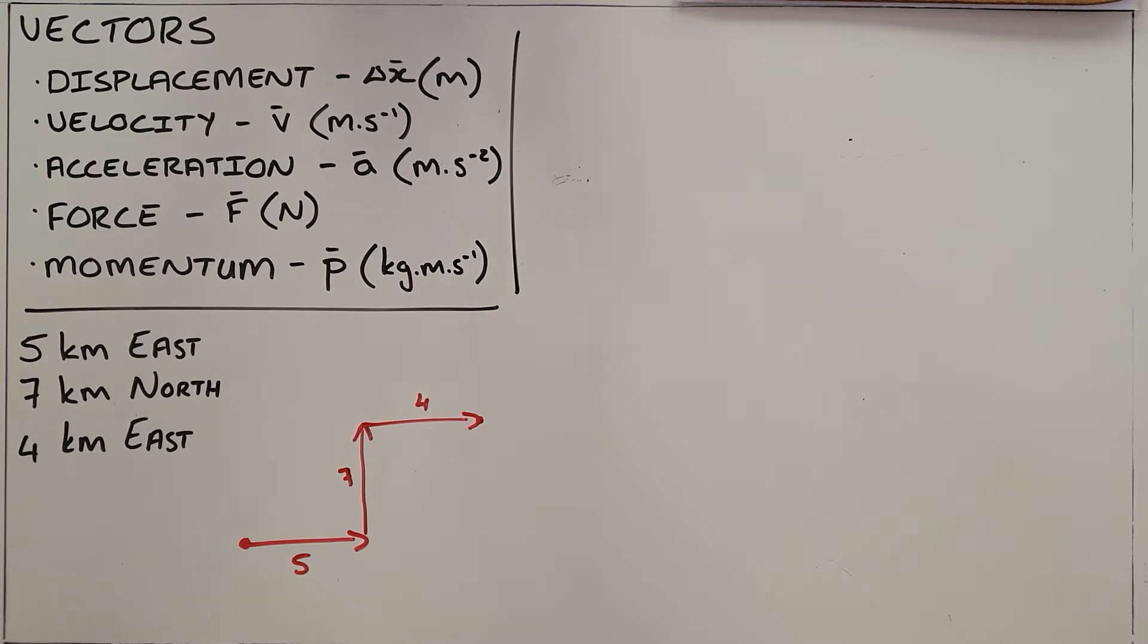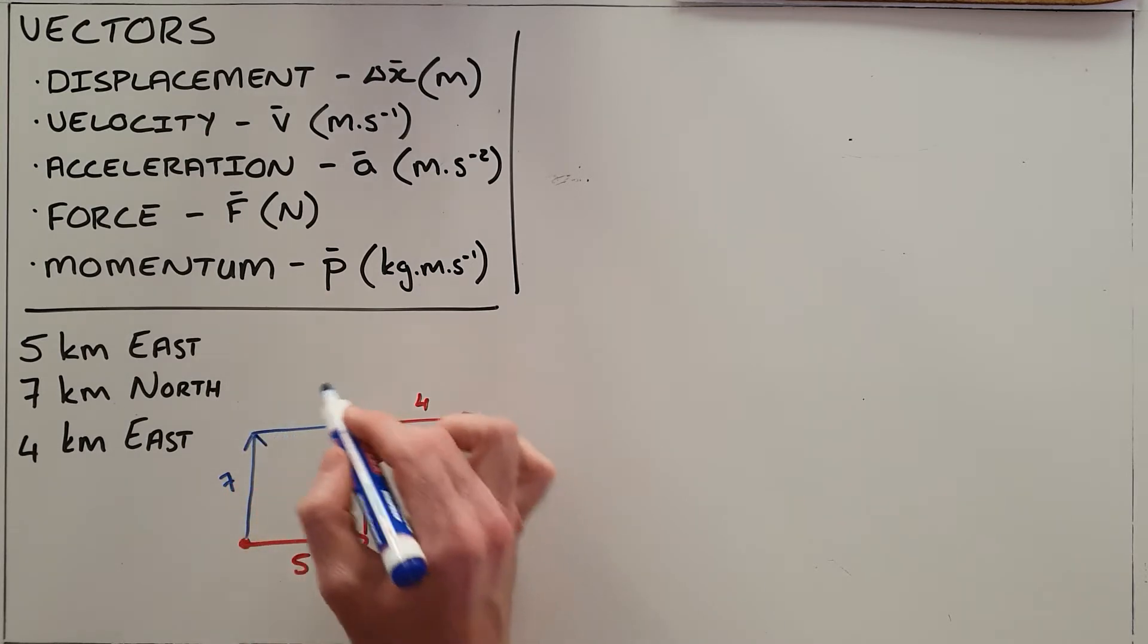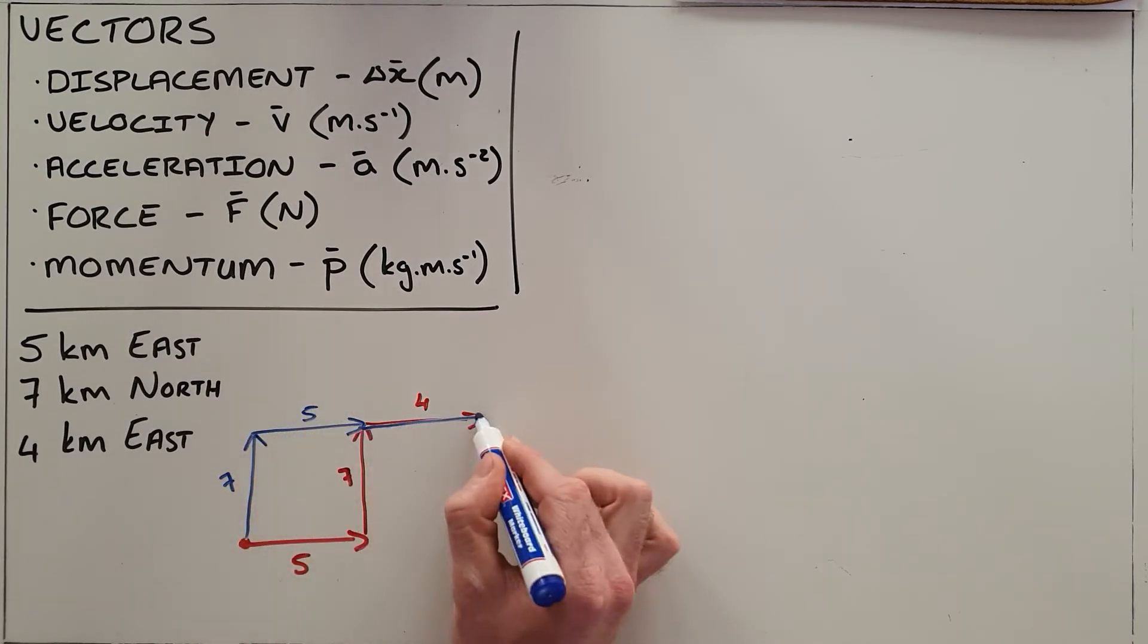Now to illustrate this point, we can show that somebody who had followed these exact same vectors but in a different order would still end in the same place. If they had first traveled seven kilometers north, then five kilometers east, and then four kilometers east again, we would find that they would end in exactly the same place.